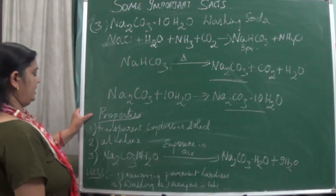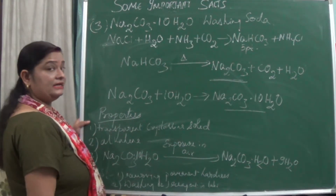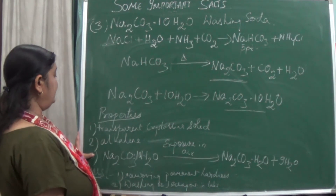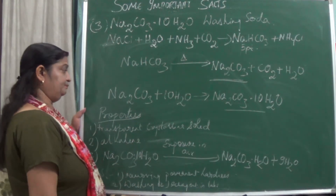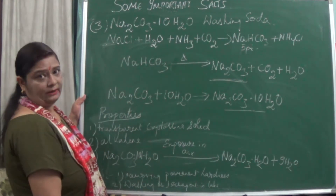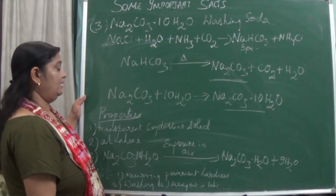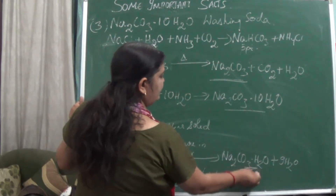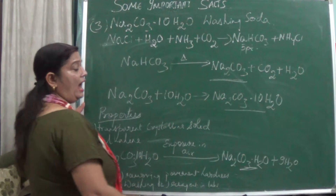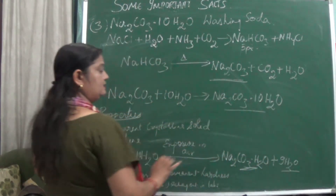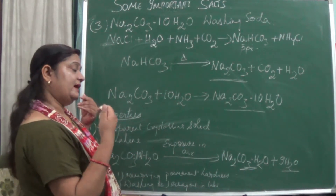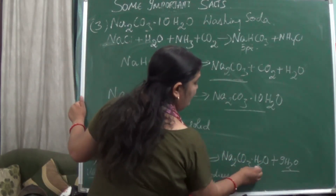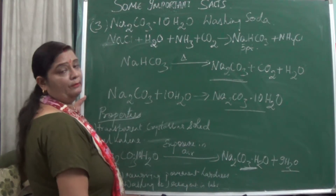Washing soda is a crystalline solid and is alkaline in nature. If washing soda is exposed and left in air, it loses its water of crystallization — nine water molecules are released out and only one water molecule remains attached, giving sodium carbonate monohydrate (Na2CO3·H2O).